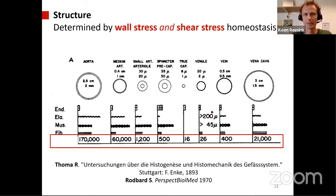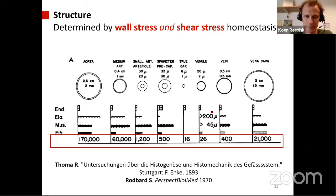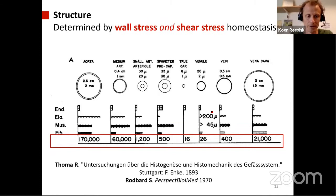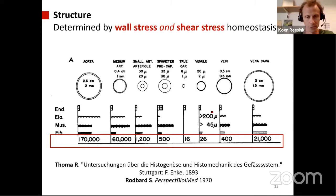Summarizing: structure is determined by wall stress and wall shear stress homeostasis. Looking at this full picture, these vessels arose from hemodynamics, and because of the local rules they got their shapes and properties. The red bar shows stress or tension values from these vessels, and this has been known for quite a while — you see references to Thomas and also Rodbert, who wrote a very nice article about how vessels achieve this.